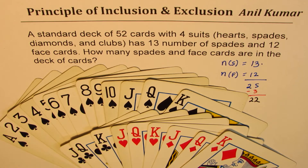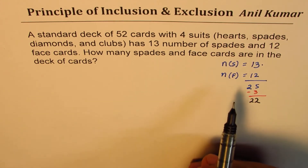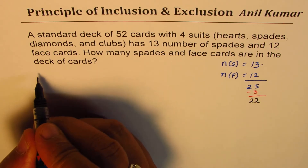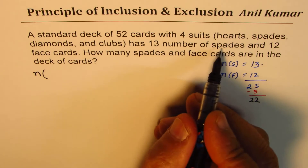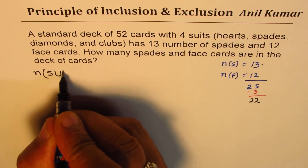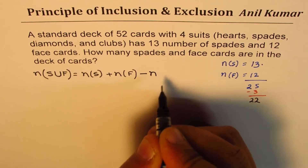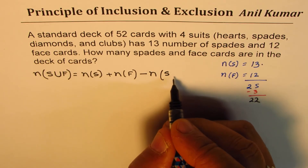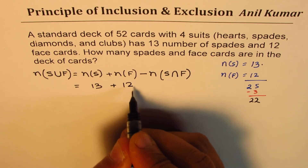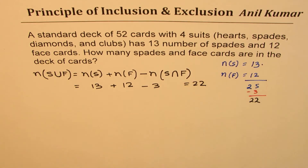So I hope the concept is very clear. Let me write down the statement, which is also a formula we can always use to count properly when we have events that are not mutually exclusive. We are counting the number of spade cards S union face cards F, which equals the number of spade cards plus the number of face cards, minus those common to both — the intersection of spades and face. In our case: 13 plus 12 minus 3, which gives you 22.